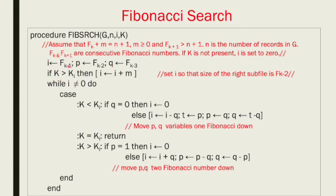Now we look at the right subtree and left subtree. If K is greater than element at position I, we set I equal to I plus P and move to the right subtree. While I is not equal to zero, we repeat. There are three possibilities: K less than K[I], K equal to K[I], or K greater than K[I]. If K less than K[I] and Q equals zero, the element is not found, and I is set to zero so the loop exits.